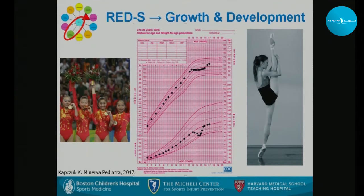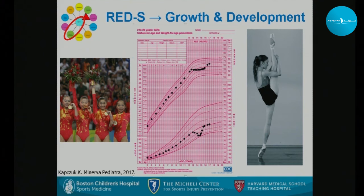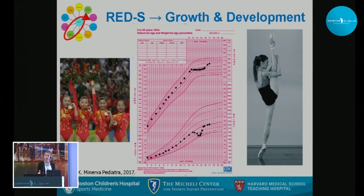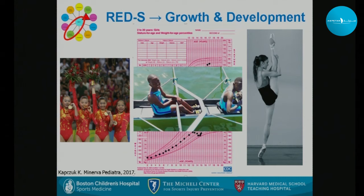Regarding growth and development: athletes who trained heavily and didn't eat enough early on may have delays in their growth curve. The growth curve of a ballet dancer shows her height plateauing as her weight sinks — an abrupt change that can improve when they fuel better. This can also be an issue in areas with limited food availability.